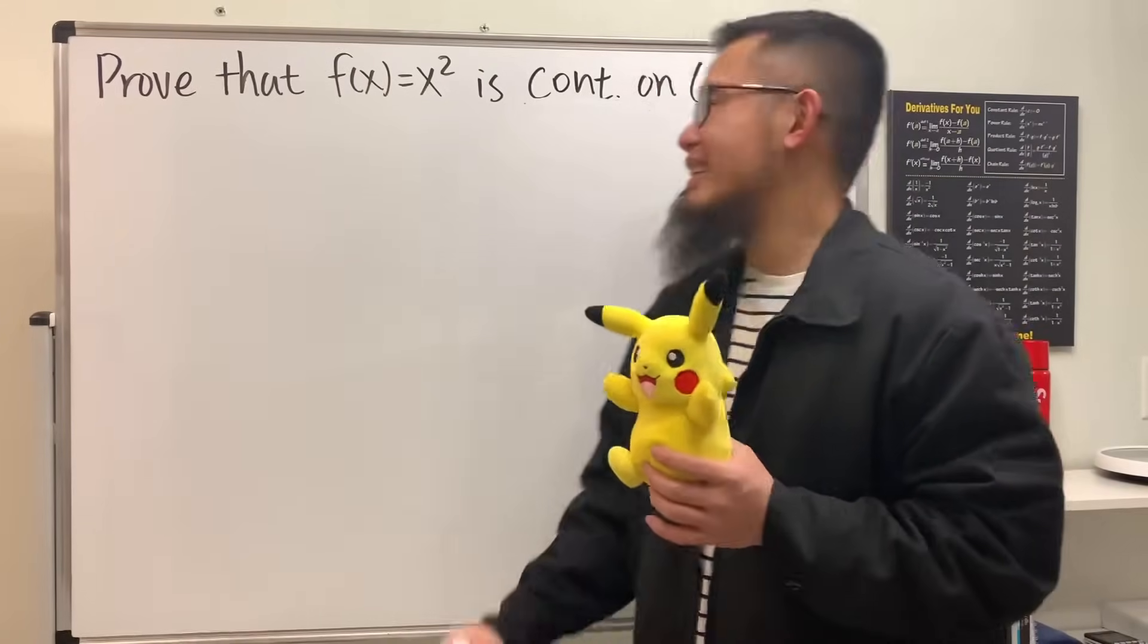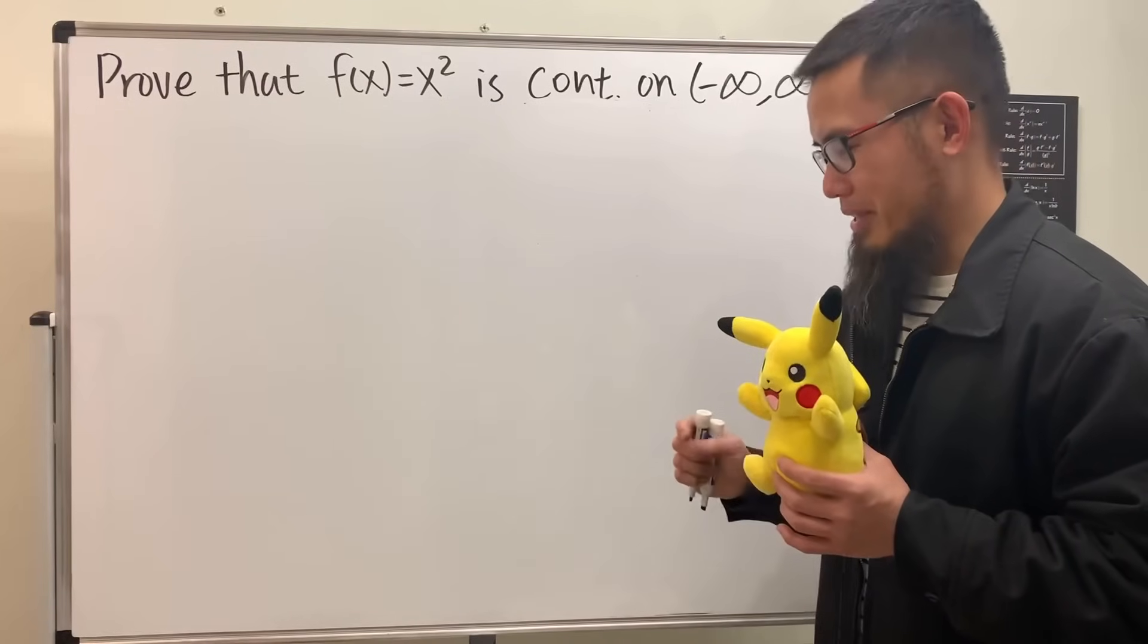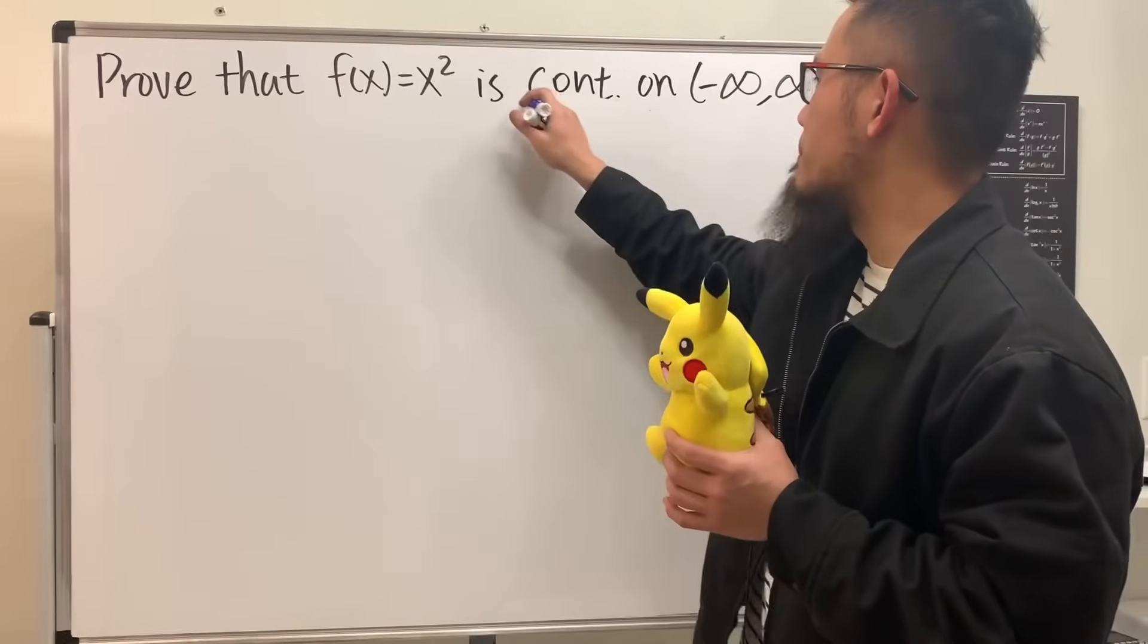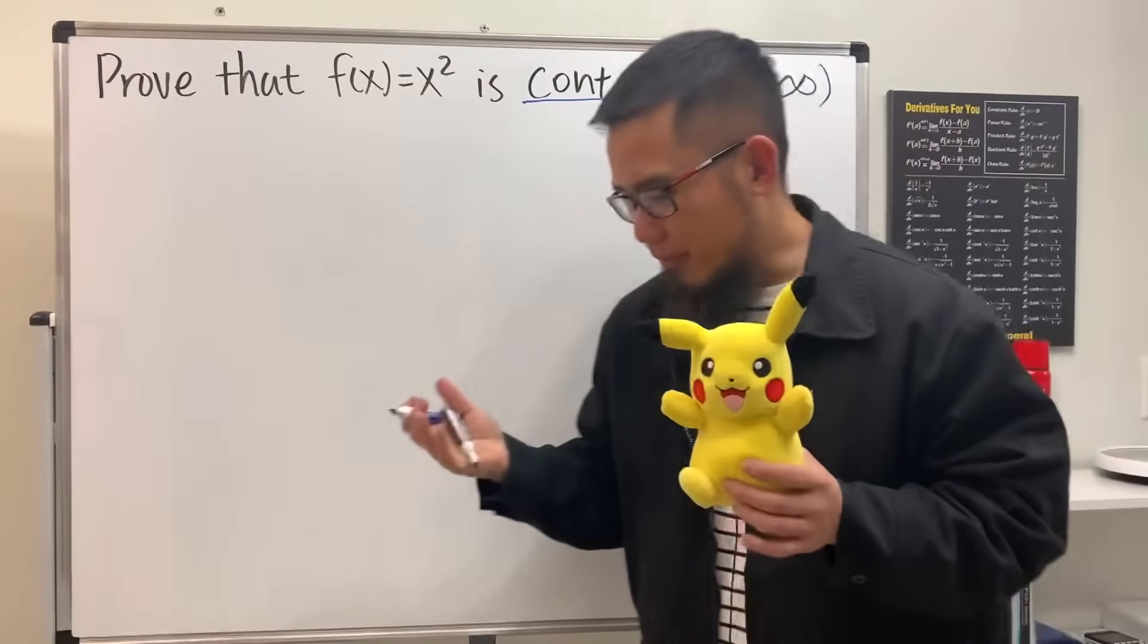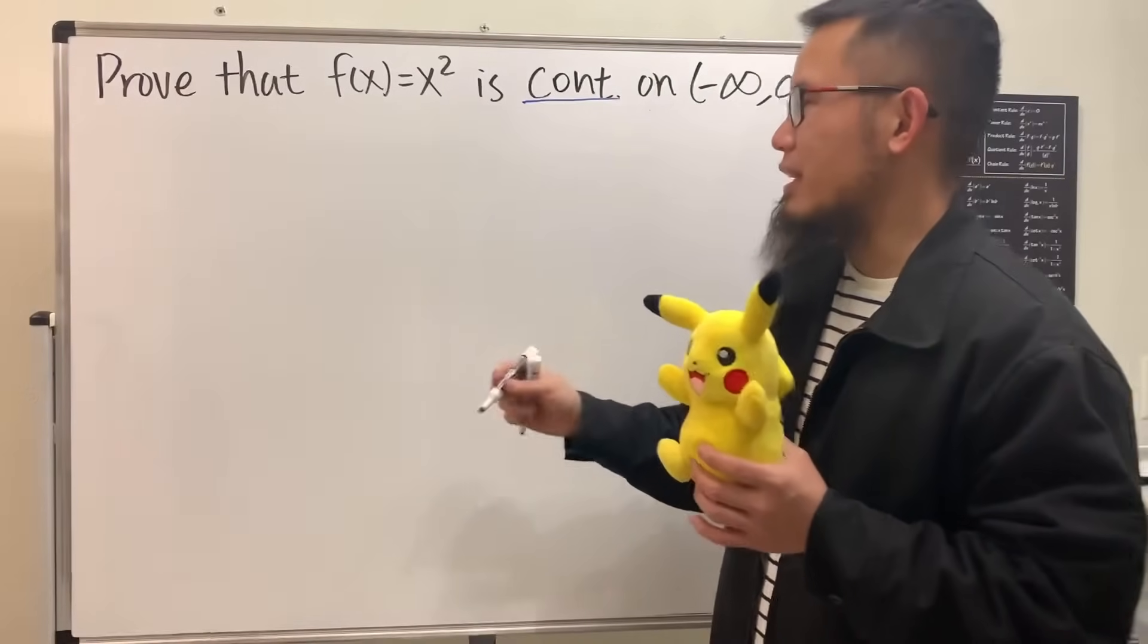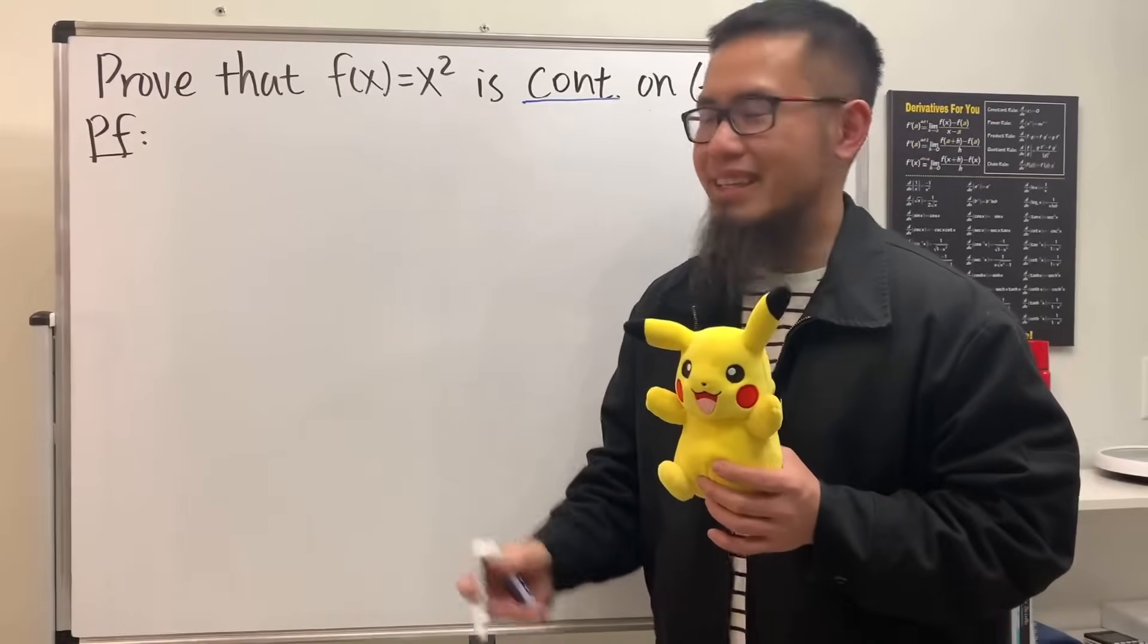So how can we give a legitimate proof for this right here? Well, let me tell you, it's all about using definitions. So first we'll have to talk about what's the definition for a function to be continuous. And before everything, let's go ahead and write down 'Pf' because this way at least we have something on the board for the exam.